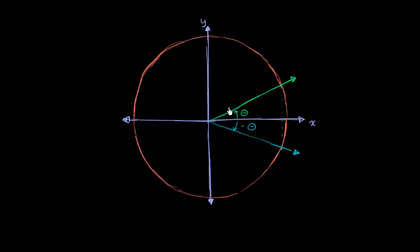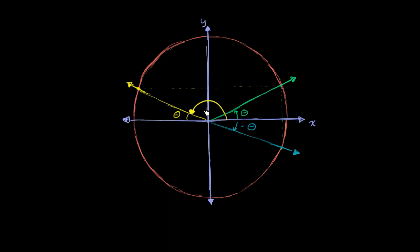Now let's flip our original green ray over the positive y-axis. We go from there all the way to a new point and draw that ray. What is the measure of this angle? We know that going from the positive x-axis to the negative x-axis is pi radians, since that's halfway around the circle. So this angle is pi minus theta — these two angles are supplementary and add up to pi radians or 180 degrees.